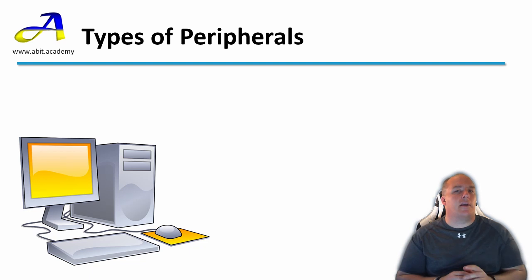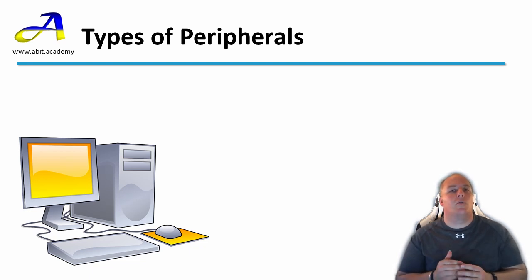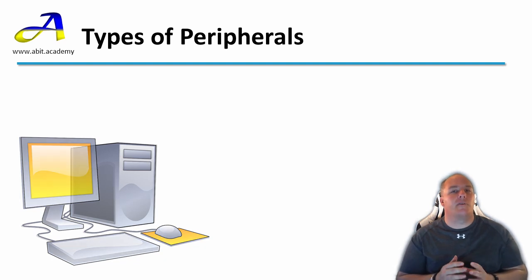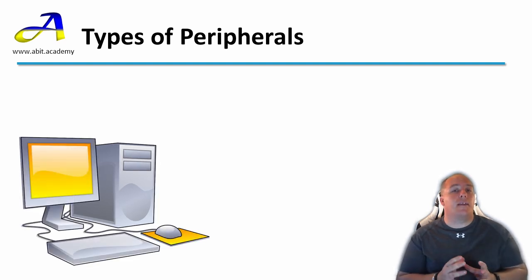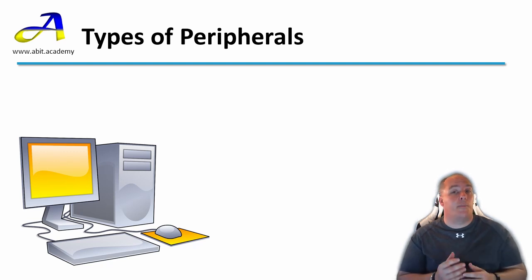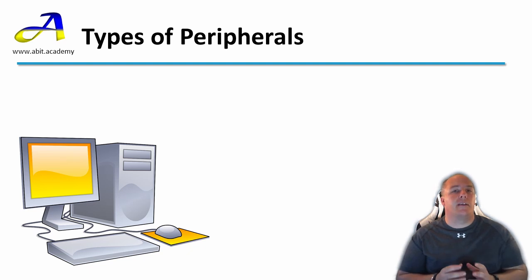Let's take a look at this diagram of a computer again. If I asked you to point to the computer, what would you point to? In this picture the computer is the grey box. The other things in this picture are peripherals. Strictly speaking, the computer doesn't need these to operate, but they add additional functionality by enabling somebody to interact with the computer.